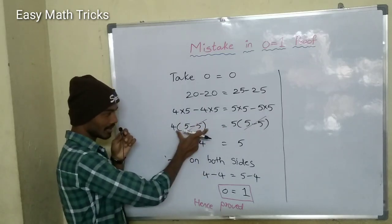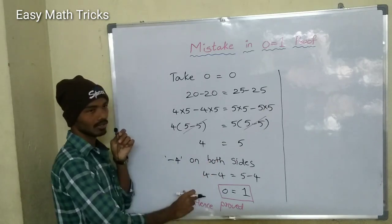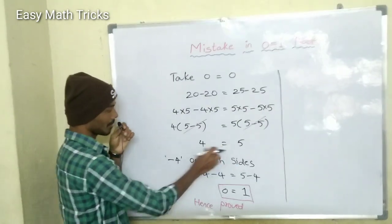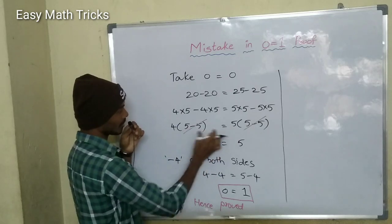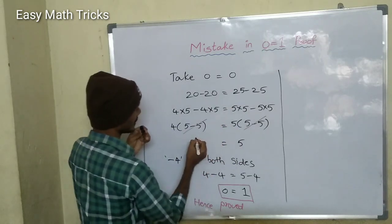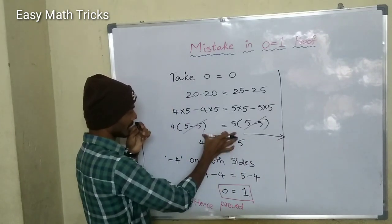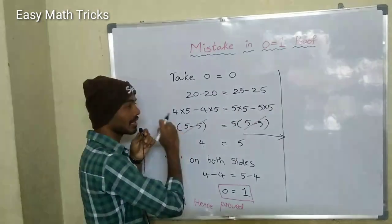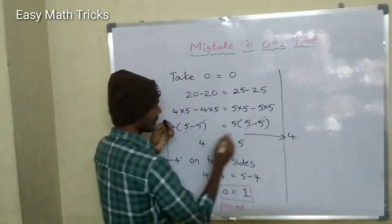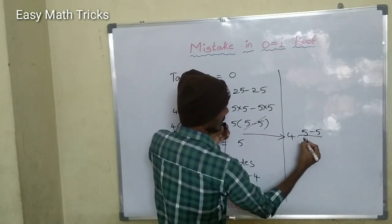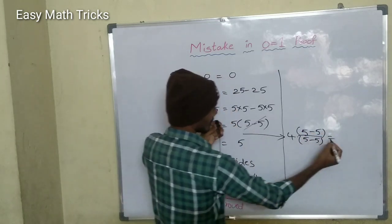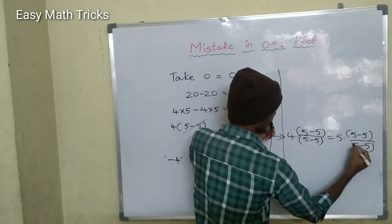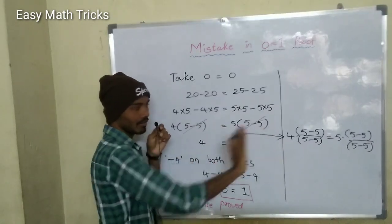Let me show you now. Everything we do on the left side and right side — this is how to do the left side and right side. Minus 4 on both sides, plus 5 on both sides. Multiplying on both sides, dividing on both sides. This means dividing with 5 minus 5 on both sides. We divide the left side and right side. This is four. We divide the numerator here — five minus five, we divide.